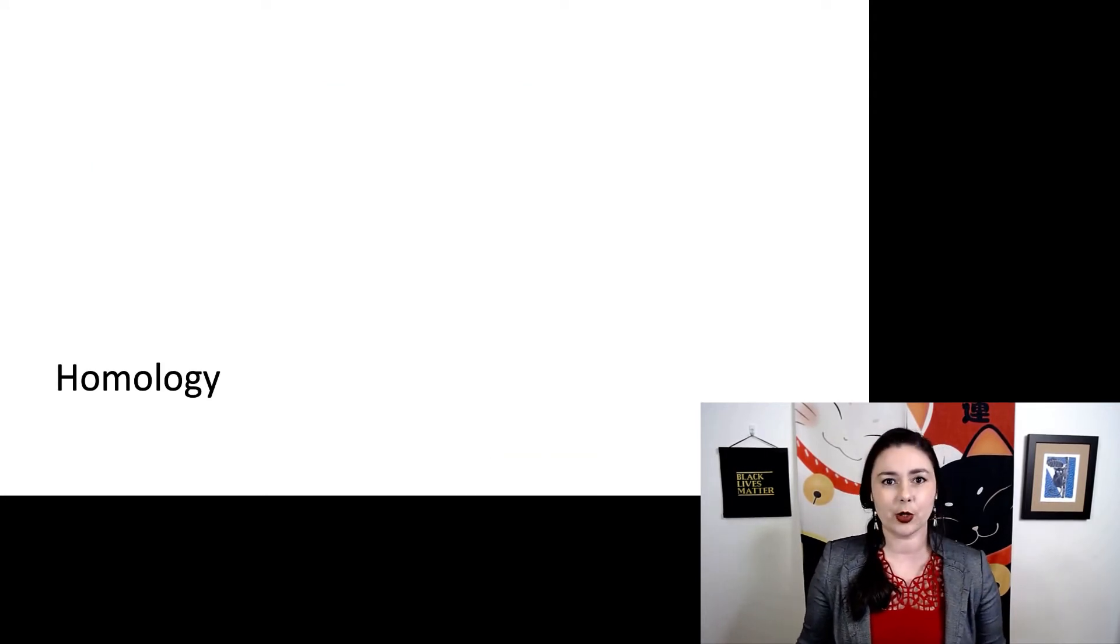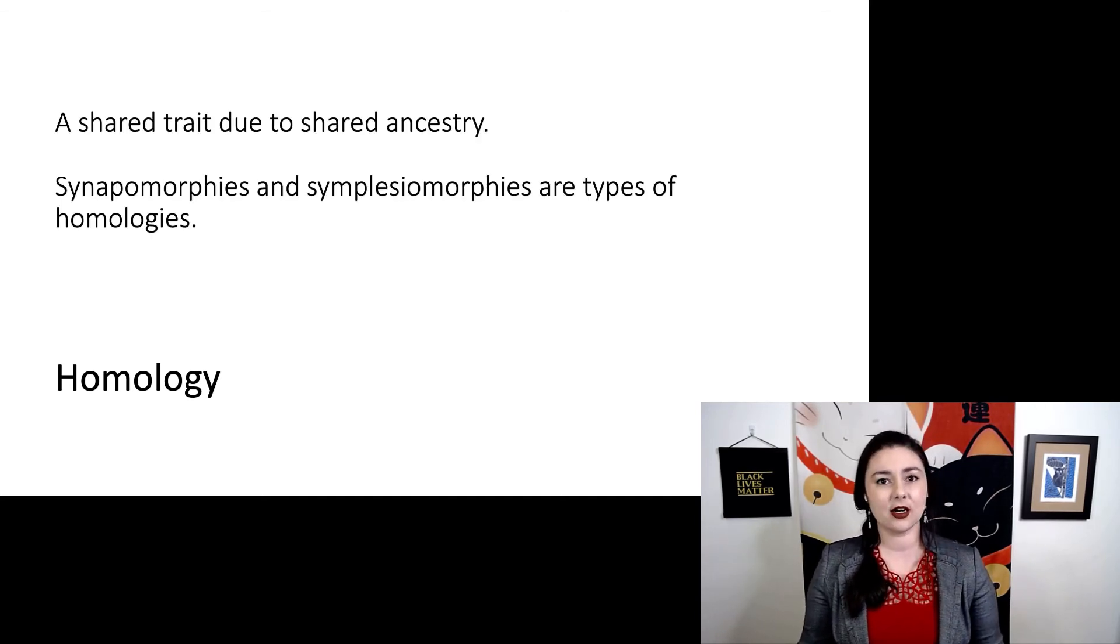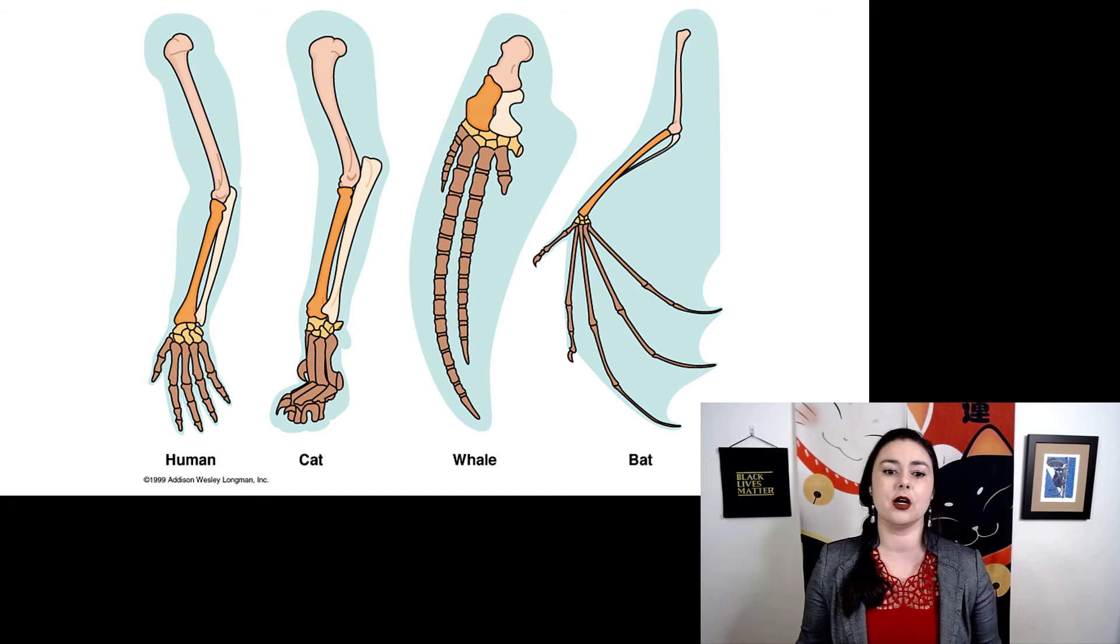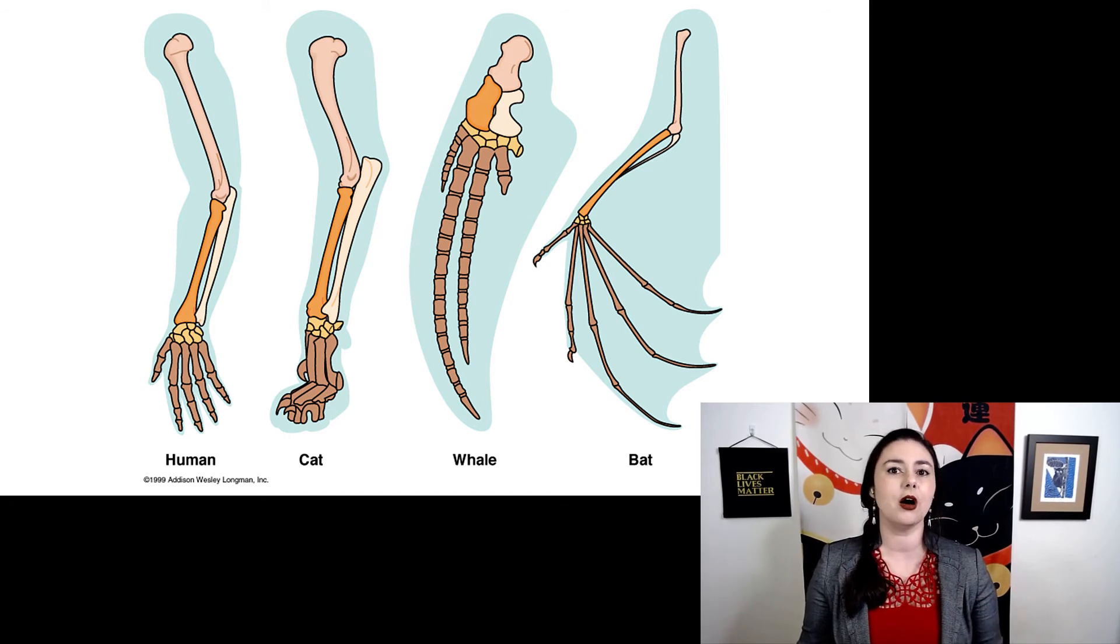But let's remind ourselves of some important terms, namely homology. A homologous character is similar because it is shared due to similar or recent ancestry. Both synapomorphies and symplesiomorphies are types of homologies, just relatively old or relatively new. So again, this classic example, the same bones in our forelimbs across all tetrapods, those are symplesiomorphies or synapomorphies, depending on your level of comparison.